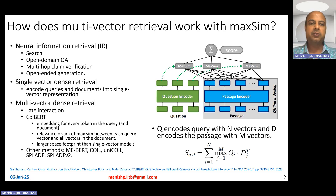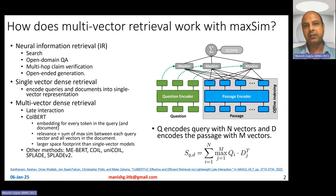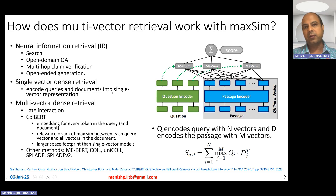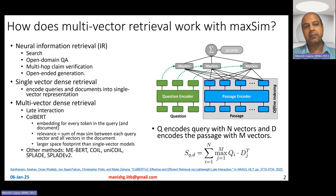Typically, people do dense retrieval using single vector dense retrieval methods, which basically means you have a query and a document, you encode both using the same encoder, come up with one vector representation for the query and one for the document, do cosine similarity matching, and return top-K results.